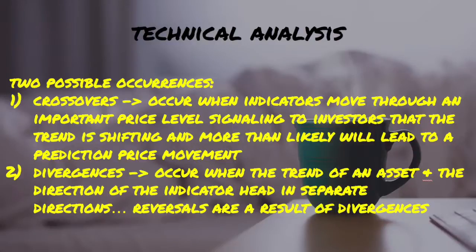Divergence most often occurs when the trend of an asset and the direction of the indicator head in separate directions. When this divergence occurs, it signifies to traders that the price trend of a targeted asset is weakening and more than likely will conduct a reversal and change directions.